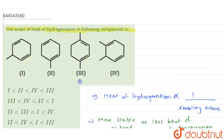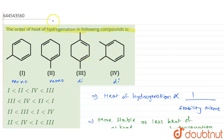We have molecules 1, 2, 3, and 4. Compound 3 is disubstituted, compound 4 is disubstituted, compound 1 is monosubstituted, and compound 2 is also monosubstituted. Since compounds 3 and 4 are more substituted according to the Saitzeff rule, we consider their alpha hydrogen atoms to differentiate them.